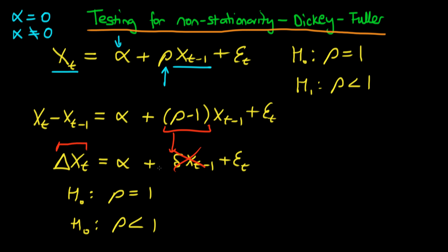So how do we actually test whether we have a non-stationary time series or a unit root? Because a unit root is when rho equals 1, in which case delta equals 0.